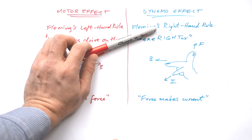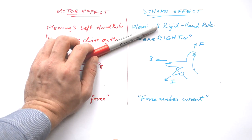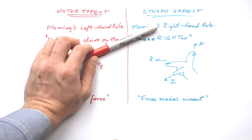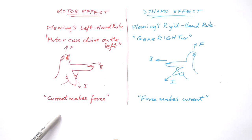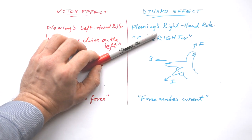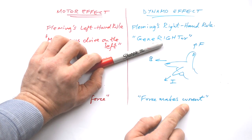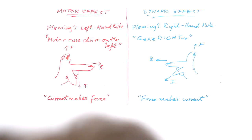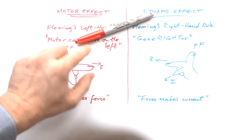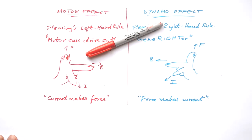So we do have a problem with this, because if we have a current going through a piece of wire and that's causing it to move downwards, we're getting a current to make a force. But then that force in turn makes a current as well. So it seems like we cannot have one without the other — and that's absolutely true.